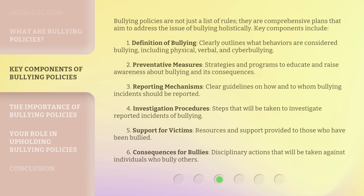2. Preventative measures — strategies and programs to educate and raise awareness about bullying and its consequences. 3. Reporting mechanisms — clear guidelines on how and to whom bullying incidents should be reported. 4. Investigation procedures — steps that will be taken to investigate reported incidents of bullying. 5. Support for victims — resources and support provided to those who have been bullied. 6. Consequences for bullies — disciplinary actions that will be taken against individuals who bully others.